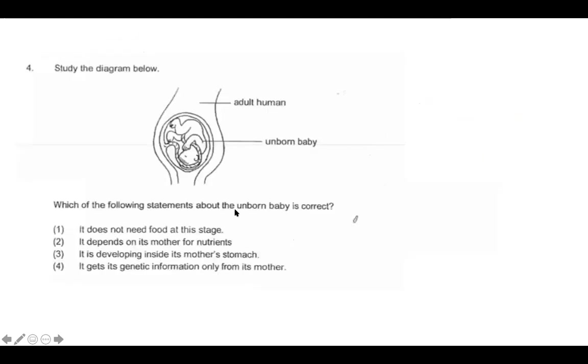Let's look at the diagram. Which of the following statements about the unborn baby is correct? It does not need food at this stage. Well, we know that's not correct, because if it's going to grow, it needs food. It depends on its mother for nutrients. Well, that's correct, because by the umbilical cord and the surrounding tissues, it gets its nutrients, because how else is it going to get its nutrients? Number three, it develops inside the mother's stomach. Well, even though it looks like it's in the mother's stomach, it's actually in her uterus. So that's not correct. And number four, it gets its genetic information only from its mother. Well, that's not true, because if we think about even ourselves, we have certain genetics that are from our mom and from our dad. So the answer is number two.